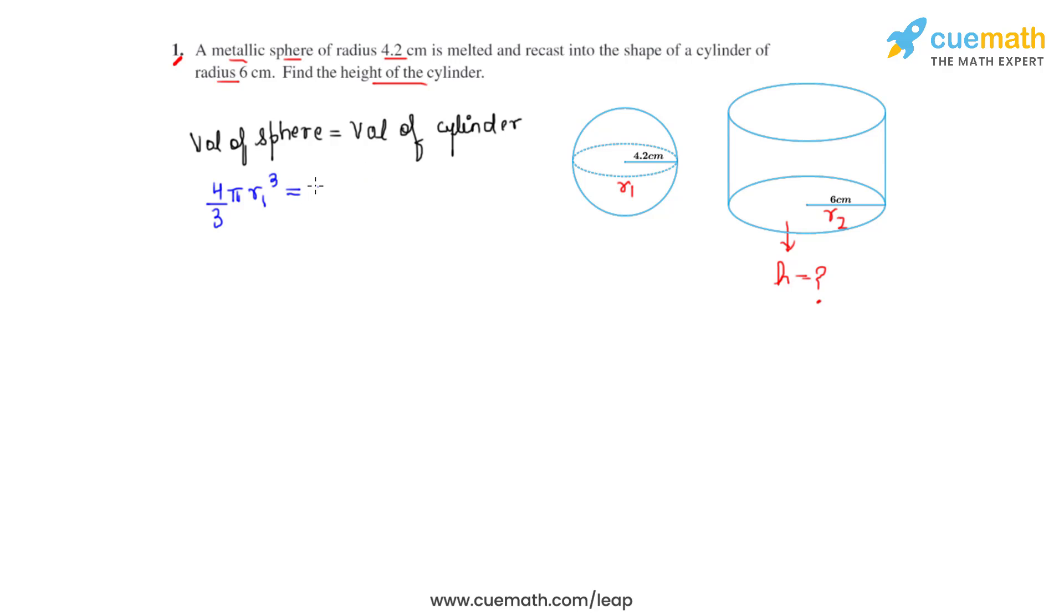We can cancel out pi from both sides. So if we rearrange the terms, we would get that the height of the cylinder will be equal to 4 r1 cube divided by 3 r2 square.